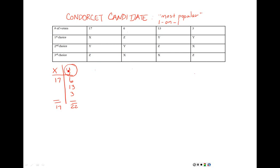However, looking at just X and Y without Z, Y is the more popular candidate. We can now say it's not X, because X lost a one-on-one election. In order to be the Condorcet candidate, every one-on-one matchup has to be won. X lost to Y, so X cannot be the Condorcet candidate. Y won this matchup, so let's see how Y and Z match up.